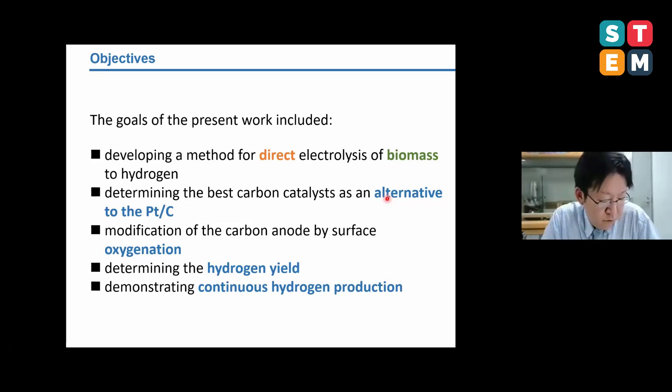Thinking of these challenges, we set the object of research as this. The goal of this research is listed here. First, developing a method for electrolysis of biomass directly to hydrogen. Then determining the best carbon catalyst as an alternative to platinum-carbon anode, and modification of the carbon anode by surface oxygenation. Determining the hydrogen yield. Finally, demonstrating continuous hydrogen production.